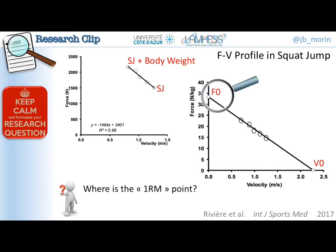Especially on the force side, which is the aim of this study: where is the one RM point? Is it very close to F0? And are all these points aligned? The two questions are: where is the one RM point on this relationship, and is it aligned with the other points? This brings interesting data for practitioners and researchers when comparing the maximum force output experimentally obtained — the one RM — to the theoretical extrapolation of the profile, which is F0.